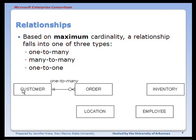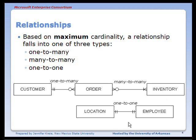In the example here, customer is in a one-to-many relationship with order — you're looking at the maximum cardinality. Order is in a many-to-many relationship with inventory, as indicated by the crow's feet on both ends of the relationship. Location is in a one-to-one relationship with employee; the maximum is one, shown by the vertical line closest to the entity on both ends.